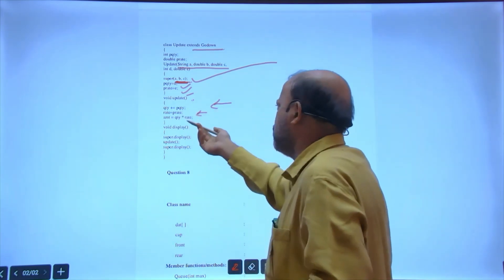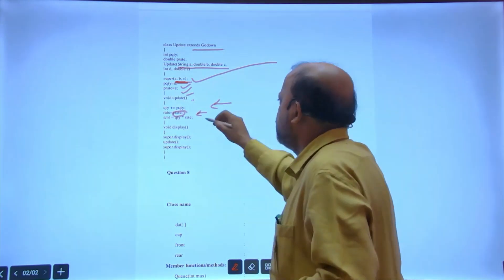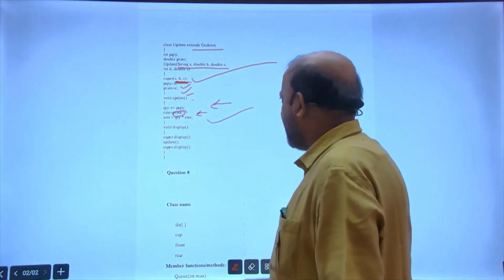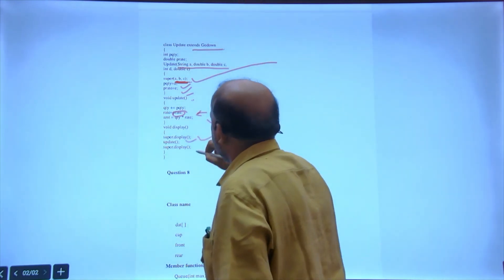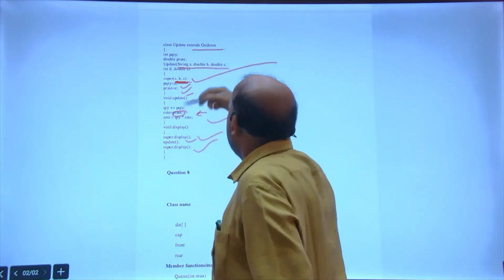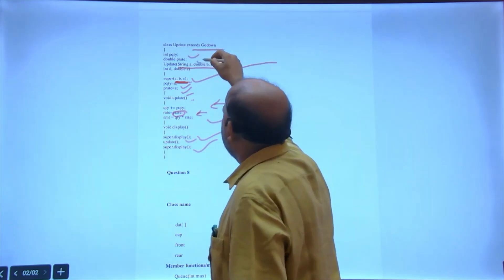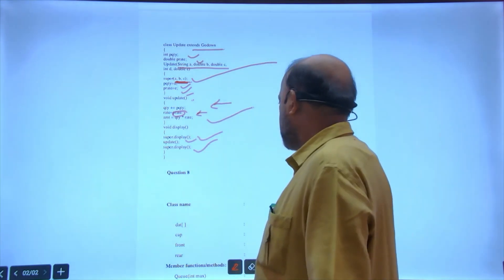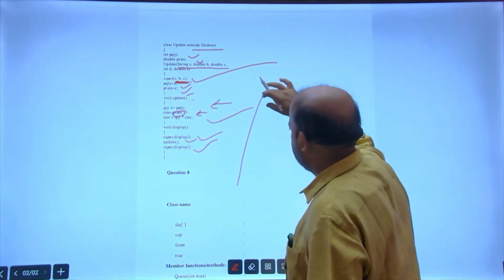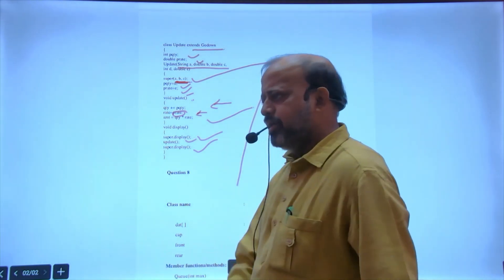In void update, according to the question, quantity is to be added, rate is to be updated with new rate. If there's a condition - if it doesn't match - you can use if. I have not used because match or not match, this p and rate I have to consider. Amount is finally calculated. In display: super.display, super.display upper ka update ke baad. Super.display again because here no other display is told. If p, q, rate were told again, then I would have printed. Not told, so simply I have followed the question.